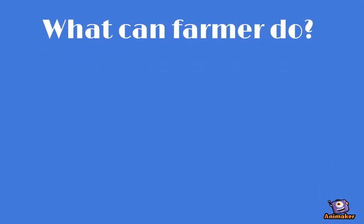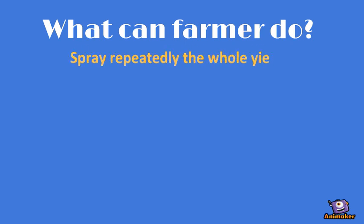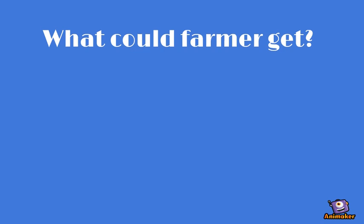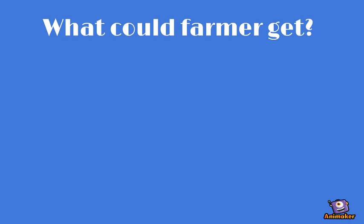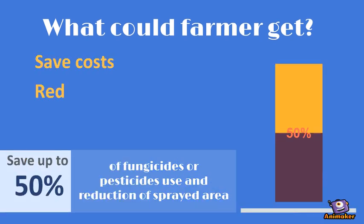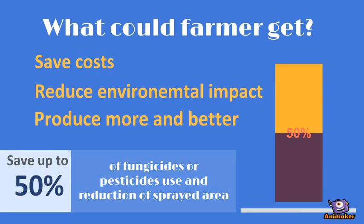What can the farmer do? He could repeatedly spray with fungicides and pesticides the whole yield. Or he could identify the problem at the right moment and spray at the right time on the right place — and thus save costs, reduce environmental impact, and produce more and better poppies.